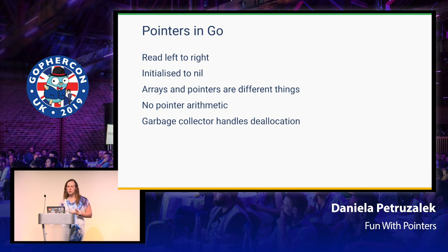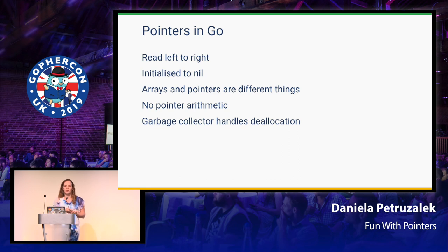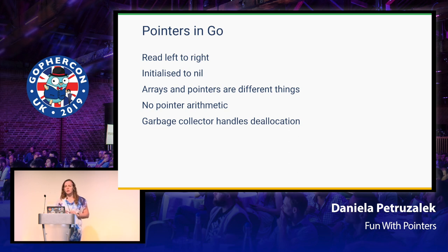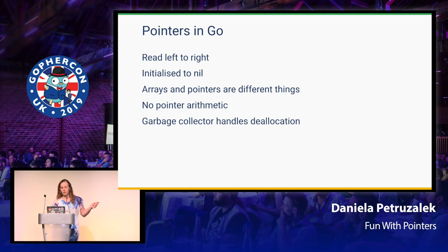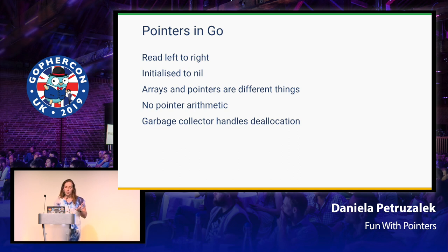How did Go solve this? First, Go has a cleaner syntax — you can read Go from left to right like a natural language. Pointers are initialized to nil, so you have a clean initialization value. Arrays, pointers, and slices are different things, although slices have a pointer to an array inside them. There's no pointer arithmetic except when using the unsafe package — we'll talk about that later. And we have a really nice garbage collector that handles allocation for us, so we don't need to worry about allocating and deallocating. That relieves a lot of the complexity from C and C++.